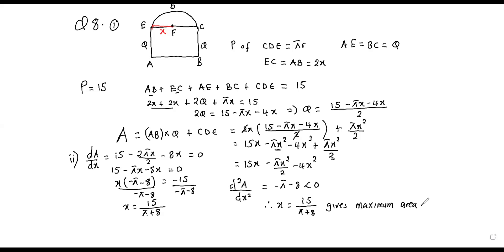The question asks to find the dimensions of the window that maximize the total area. Since we have x, the base of the rectangle should be two times x, meaning 30/(π + 8). That should be the dimension for the base of the rectangle, and then the height or width of the rectangle should be q.